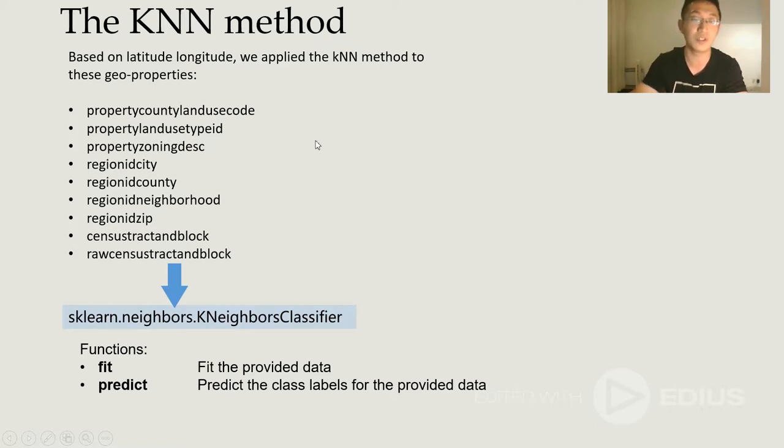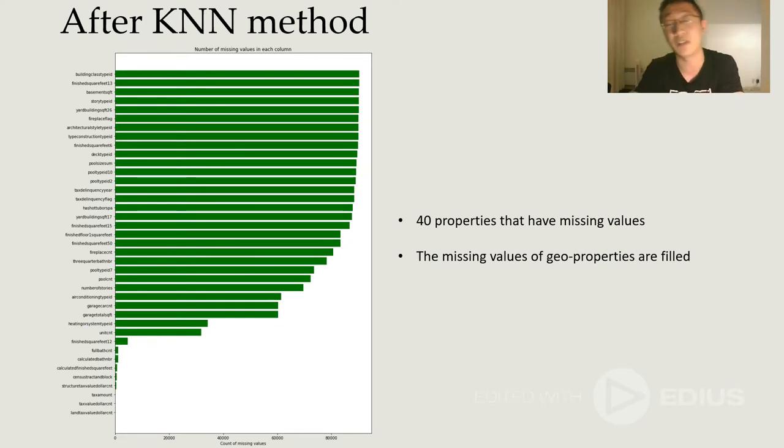We've used a built model for KNN method in sklearn called KN neighbors classifier. And the two functions we've used the most is the function fit, which fits the provided data, and the function predict, which will predict the data to fill the missing value. And the result of KNN method is pretty good. We can see that we removed 17 properties from this list. And we've also checked that there are no geo properties who have missing values.